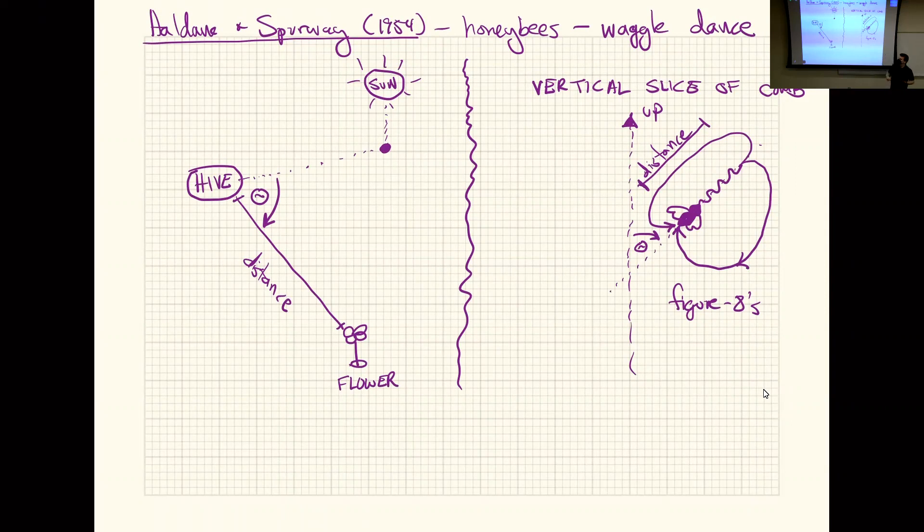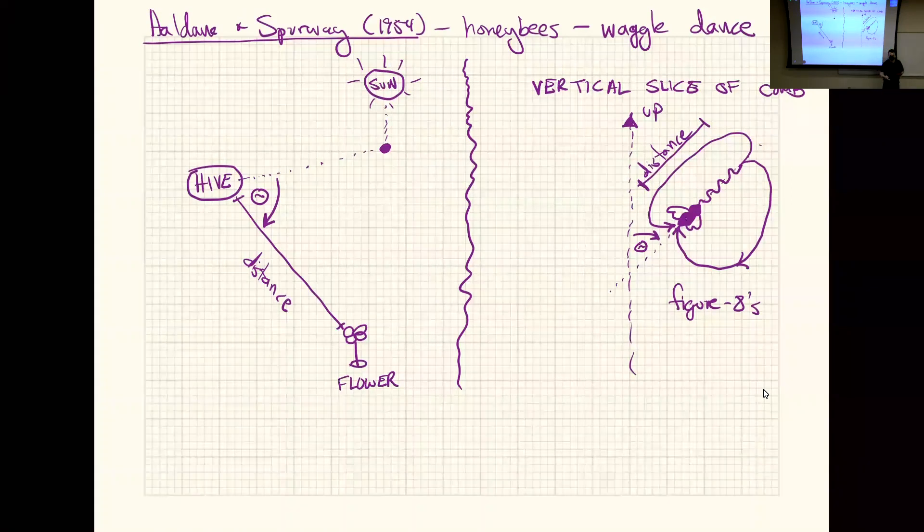When you deprive a honeybee of sleep, her waggle runs stop being so straight. They start looking kind of drunken. It turns out that those bees that are doing these drunken waggle runs don't get as many followers. Bees can recognize it might just not look enough like a waggle run, but either way, it's just like someone was constantly falling asleep trying to tell you where to go. You might not trust them. Exhausted bees that don't do a good waggle run don't get followers.